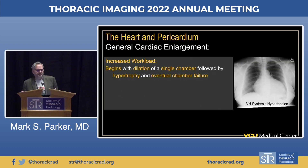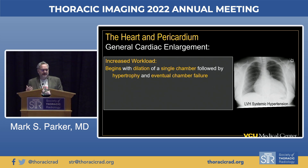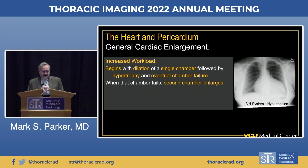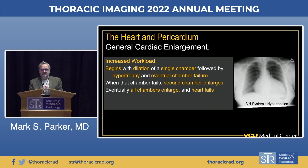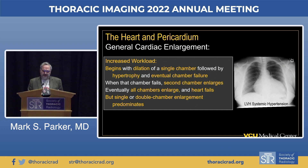What makes the heart become too big? Anything that makes it work too hard. This increased workload begins with dilatation of a single chamber, followed by hypertrophy. Eventually that chamber can't hypertrophy further and fails. When one chamber fails, another starts to dilate and hypertrophy until it also fails. Eventually all chambers fail and the heart decompensates. Even in pan-chamber failure, scrutinizing the radiograph will show that one or two chambers predominate the radiographic picture.